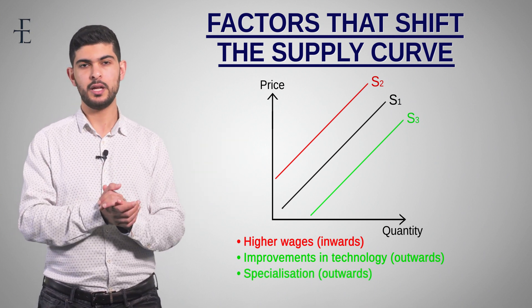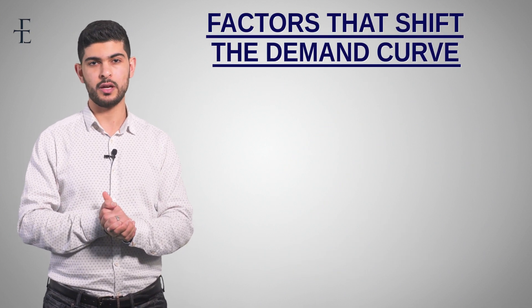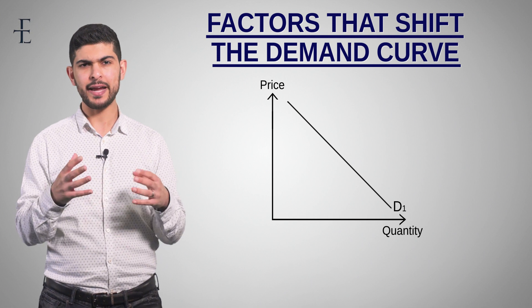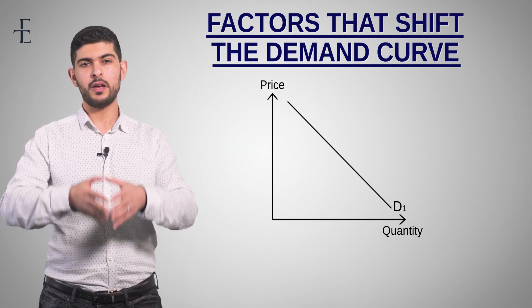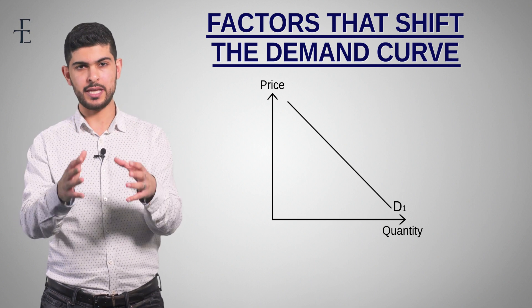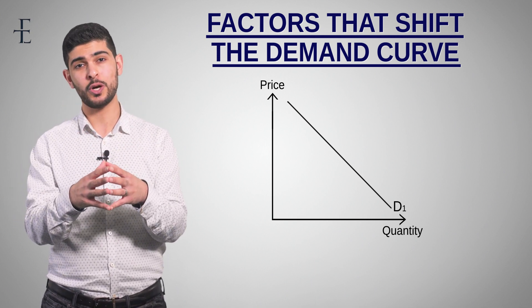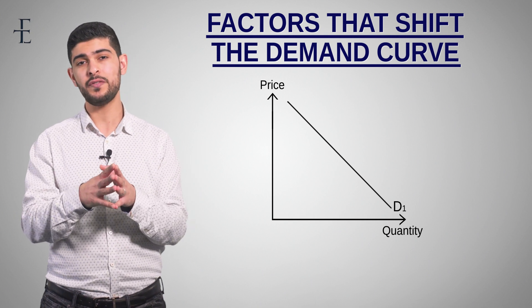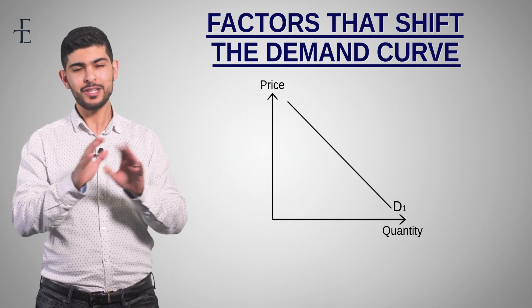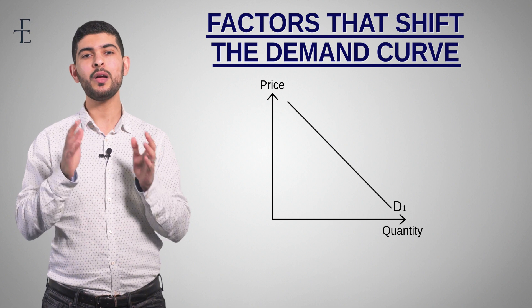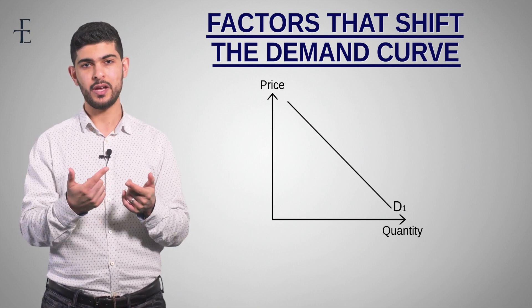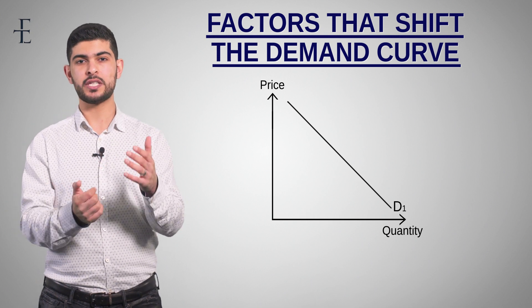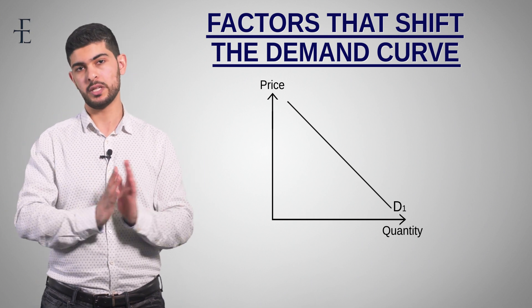So that's the supply curve. Now let's deal with factors that shift the demand curve. One of the most common misconceptions is that students say demand shifts if the price changes — that is not true. Neither supply nor demand shift due to prices; it's the other way around. For the price to change, either supply must have shifted or demand must have shifted.